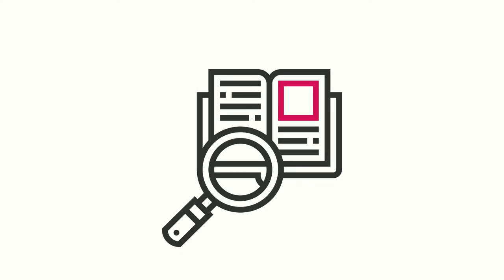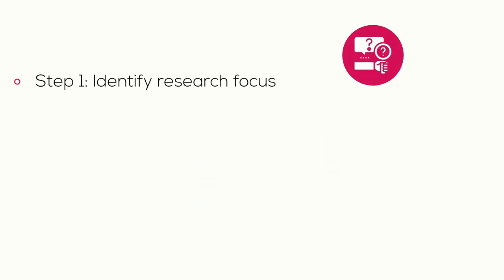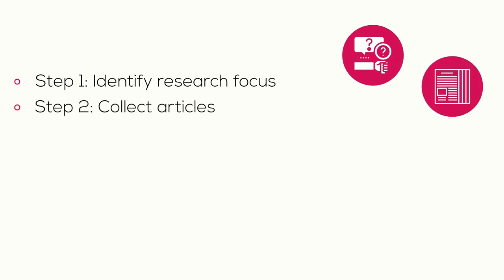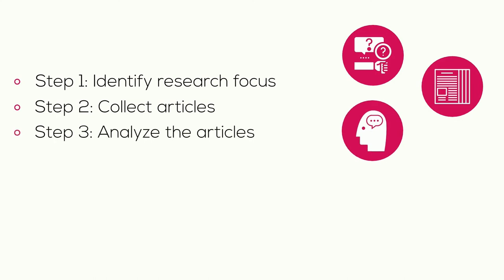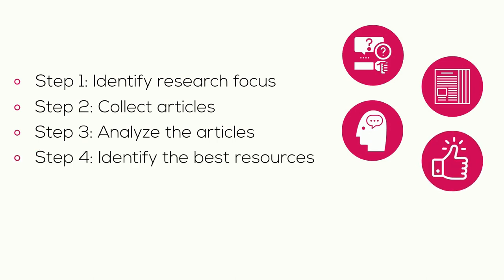To do your own literature review, you'll want to start the research process by identifying your research focus and narrow that down to a specific topic. You will then begin collecting articles — collect more than you think you'll need. Then, you're going to start analyzing the articles by skim-reading them. You don't have to read them in-depth quite yet. Identify the best, most relevant resources from the resources that you initially found.